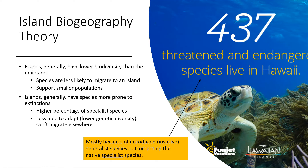Hawaii, for example, out of all 50 states has by far the largest percentage of threatened and endangered species. Most of that is because humans have brought invasive species that out-compete the native specialists. Those invasive species tend to be generalists that out-compete the native specialist species. There are approximately 437 different species in Hawaii currently listed as threatened or endangered.